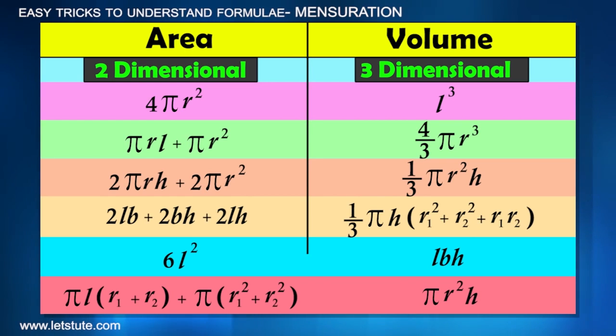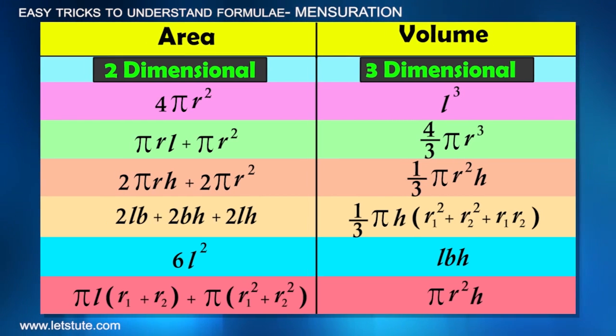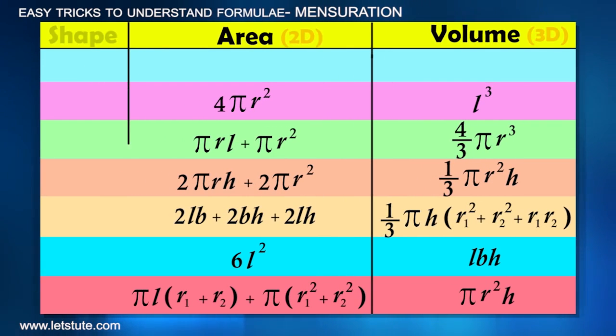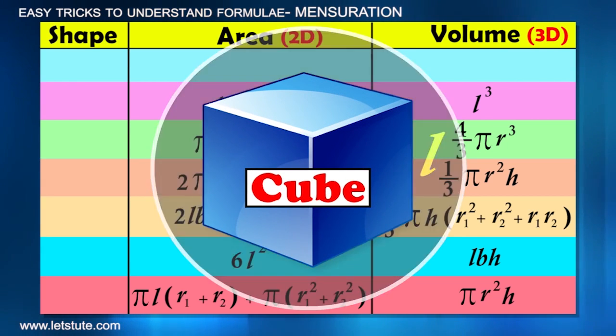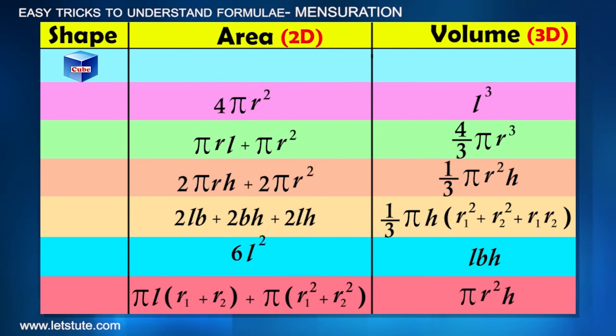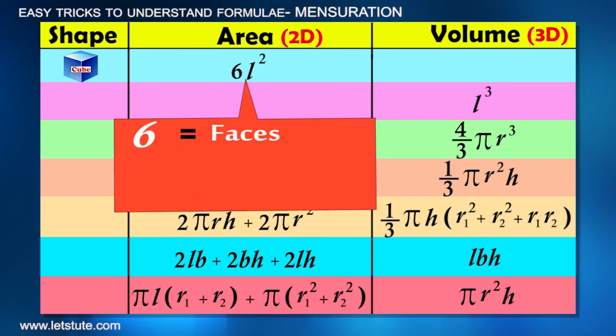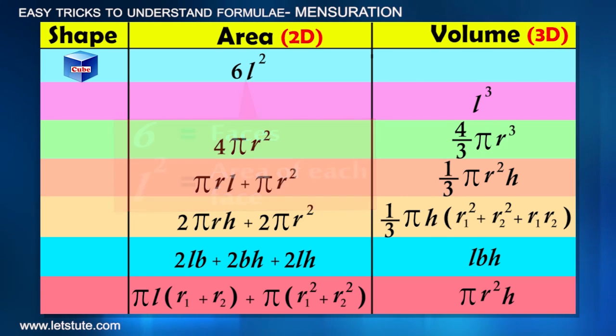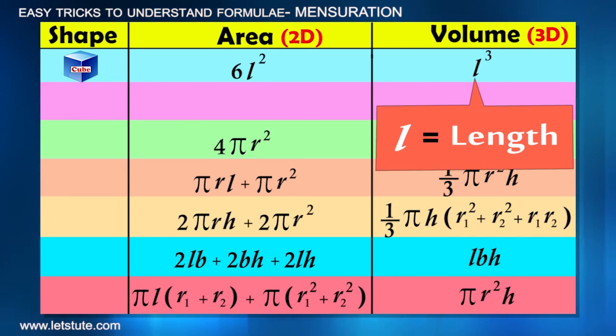So this way areas and volumes are divided. Now let's assign them according to the shapes. Let's take the cube first. Its surface area is 6L² where 6 represents 6 faces and L² represents the area of each face. Volume will be L³ as it is taking equal space in all three directions, and L represents length.